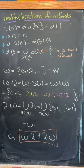We can define multiplication of ordinals via transfinite recursion with alpha times 0 is 0, alpha times the successor of beta is alpha times beta plus alpha, and alpha times beta equals the union over all lambda less than beta of alpha times lambda, if beta is a limit ordinal.